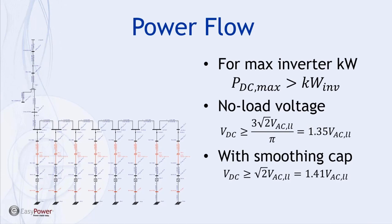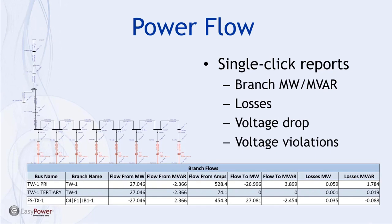Information on branch megawatt and megavar contributions as well as voltages are useful for doing reactive compensation analyses, where we're attempting to size a capacitor bank to shift the load of reactive power generation away from the inverters to improve voltages along the collector system.